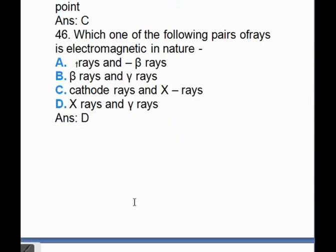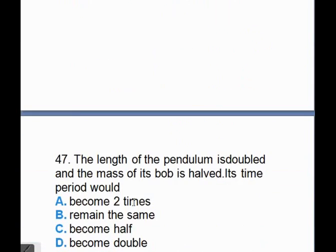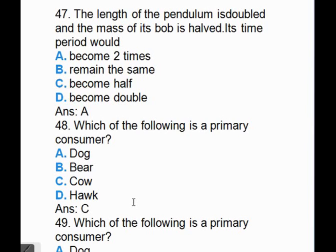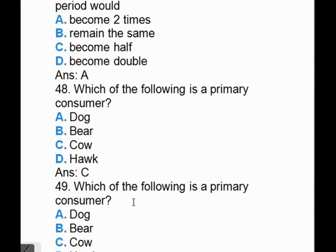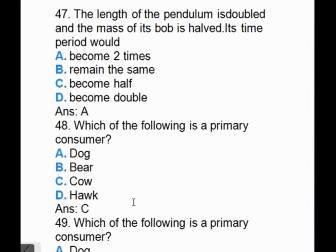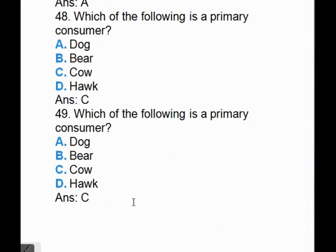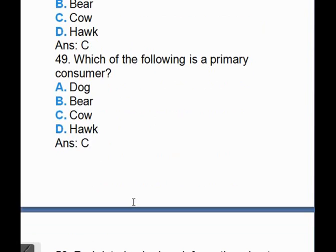Which one of the following pairs of rays is electromagnetic in nature? The answer is D, X-rays and gamma rays. The length of the pendulum is doubled and the mass of its bob is halved. Its time period would become root 2 times. Which of the following is a primary consumer? The answer is C, cow.